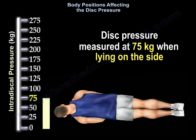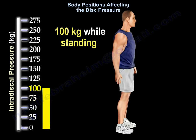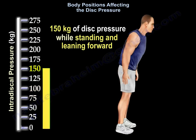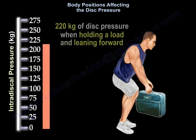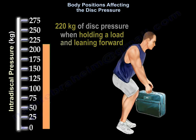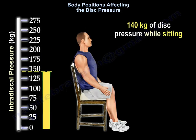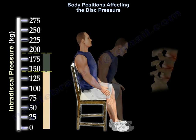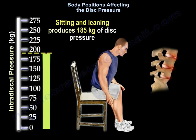When lying on the side, the disc pressure is 100. While standing, it is 150 kilograms of disc pressure. While standing and leaning forward, it is 220 kilograms of disc pressure. When holding a load and leaning forward, it is 140 kilograms of disc pressure while sitting, and 185 kilograms while sitting and leaning forward.